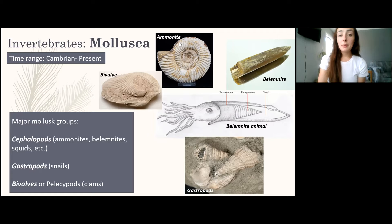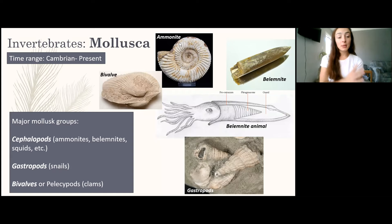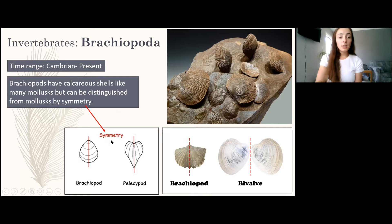The next phylum is Mollusca. Mollusks include four main groups: cephalopods, gastropods, bivalves, and belemnites. They have been around since the Cambrian. Examples shown include a bivalve on the left, an ammonite at the top, a belemnite on the right with its internal structure visible below — it looks like a mini squid, and squids are indeed cephalopods. Gastropods are snail shells, shown at the bottom.